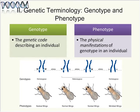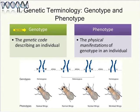Genotype is the genetic code that describes an individual — if you can describe your human genome and its variants, that's your genotype. The genotype should include information from both copies of DNA for any particular gene, since one copy comes from mom and one from dad. You can also use the word genotype to describe what's happening at a particular gene — what are the two different alleles inherited from each parent. Phenotype is the physical manifestation of the genotype in an individual.